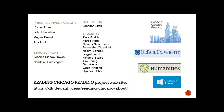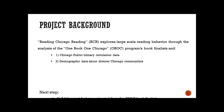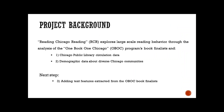This slide lists the project members as well as the agencies and companies that have supported the project so far. Reading Chicago Reading is a digital humanities project that takes as its starting point the popular and much imitated one city one book program operated by the Chicago Public Library, through which one book is promoted through the entire city. The project analyzes reading behavior of Chicagoans by focusing on the one book one Chicago program finalists, and brings into relationship Chicago Public Library circulation data and demographic data about diverse Chicago communities.